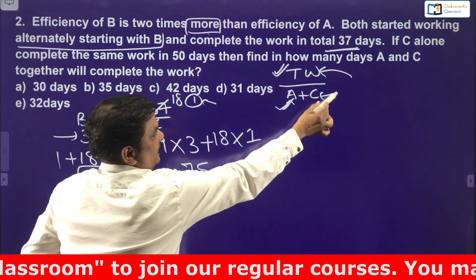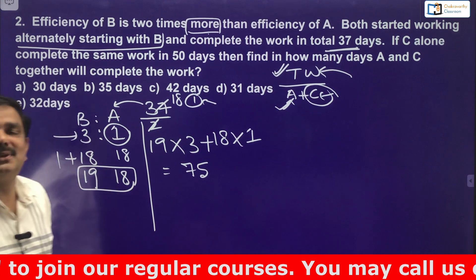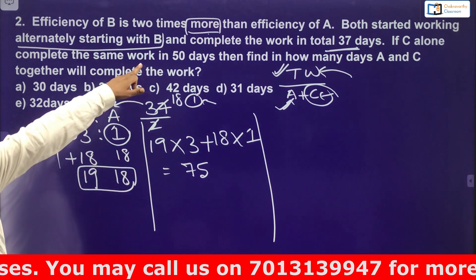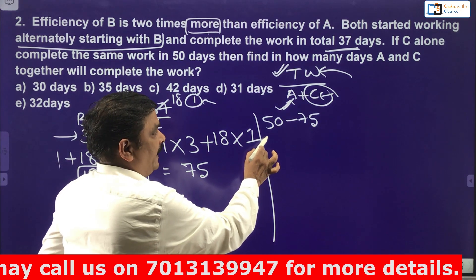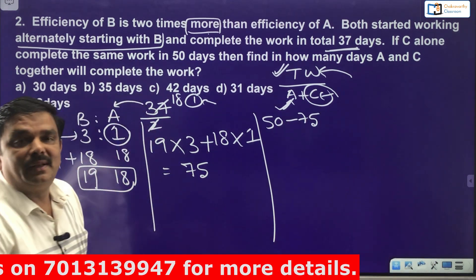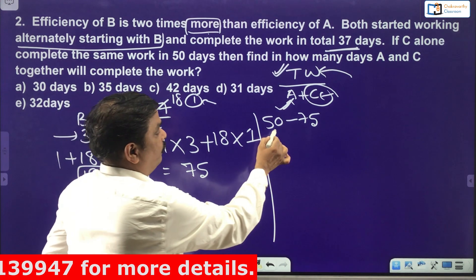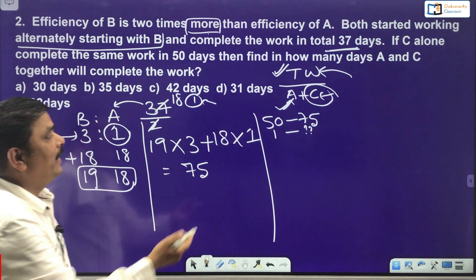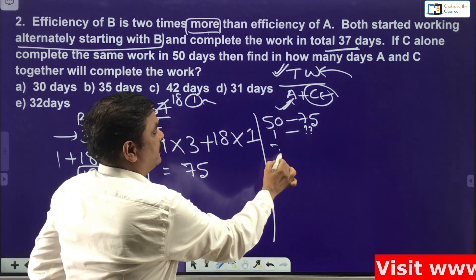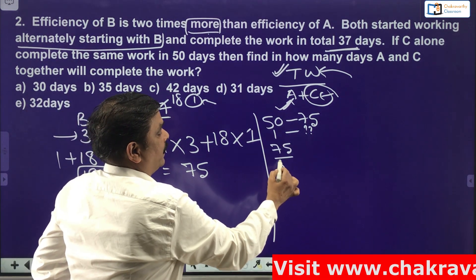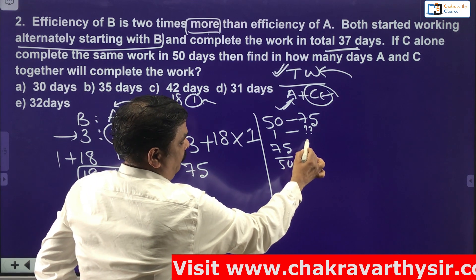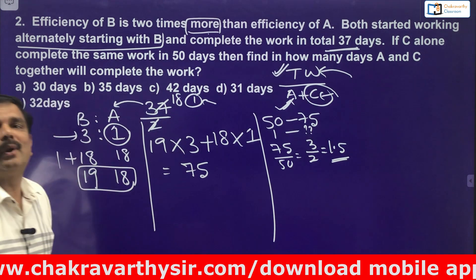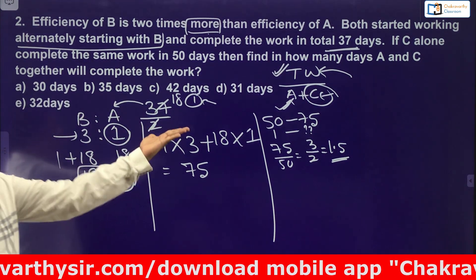Now I need to find C's efficiency. This is very simple. C alone can complete 75 units of work in 50 days. So in one day, C completes 75 divided by 50, which equals 3 by 2, or 1.5 units per day. C's efficiency is 1.5 units per day.